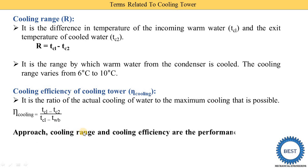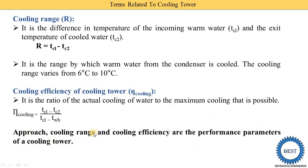Approach, cooling range, and cooling efficiency are the performance parameters of the cooling tower. In this video, we discussed 6 parameters in total. Out of 6, approach, cooling range, and cooling efficiency are the performance parameters of the cooling tower — by using these terms, we can identify the performance of the cooling towers.